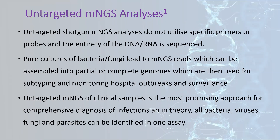Untargeted shotgun MNGS does not utilize specific primers or probes — the entirety of the DNA or RNA in the sample is sequenced. Pure cultures of bacteria or fungi yield MNGS reads which can be assembled into partial or complete genomes, used for subtyping and monitoring hospital outbreaks and surveillance. Untargeted MNGS of clinical samples is the most promising approach for comprehensive diagnosis of infections, as in theory all bacteria, viruses, fungi, and parasites can be identified in one assay from one sample.